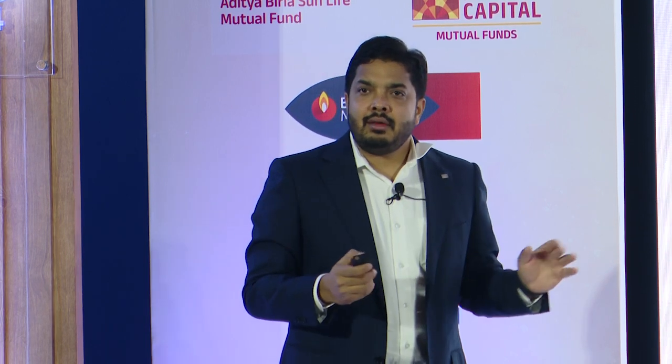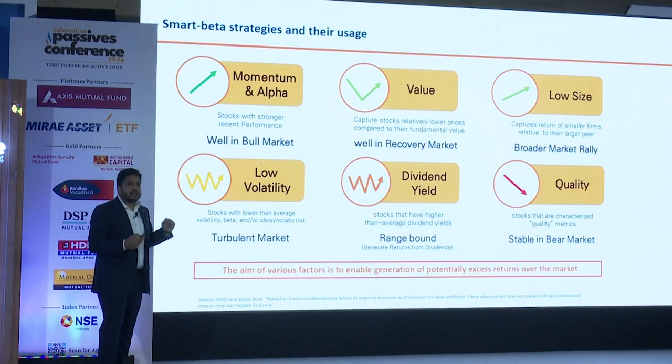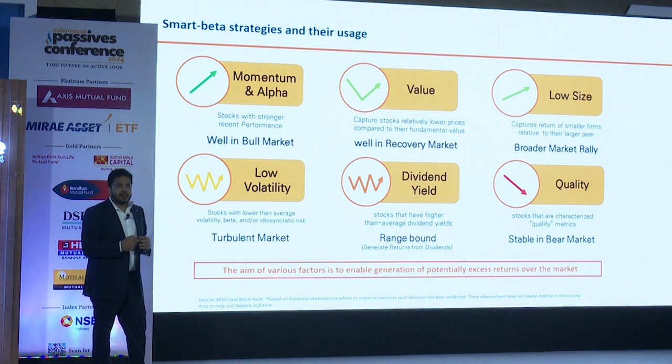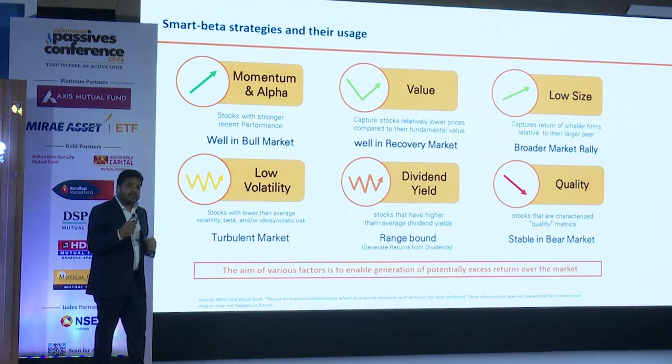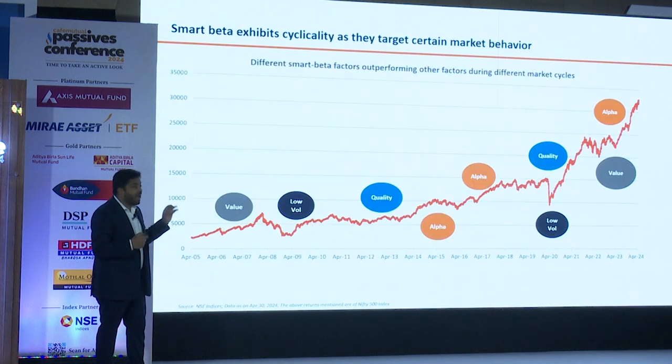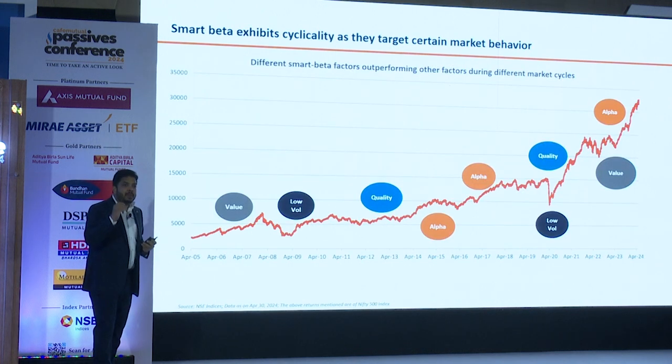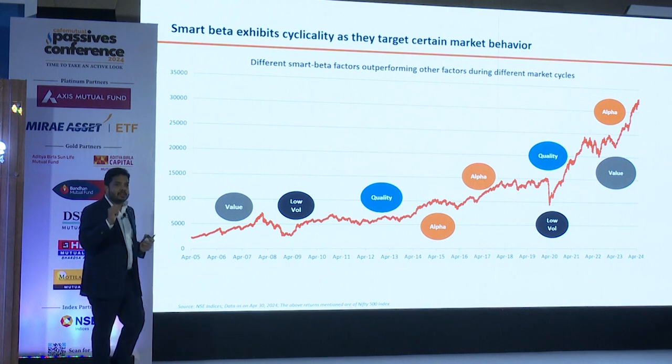Then comes dividend yield — the name itself conveys a lot. Quality is all about targeting companies which are more profitable, where earnings are more stable, etc. So on all these factors, there are now many products available, and they are becoming quite famous. Because over a period of time, they have behaved in a manner that they were supposed to.